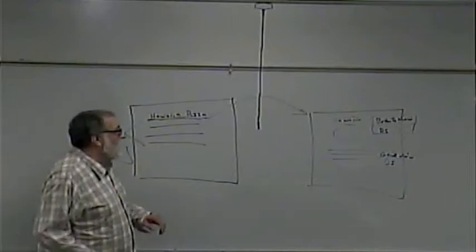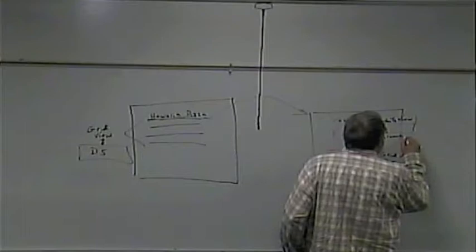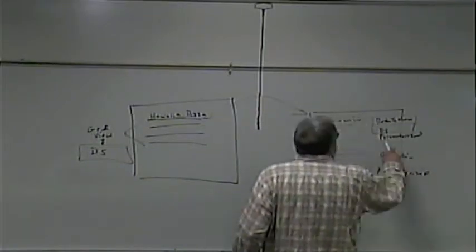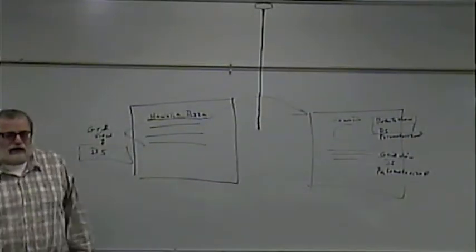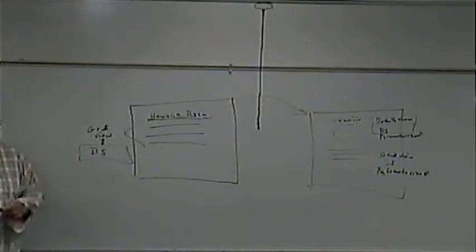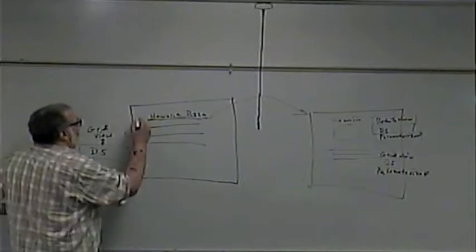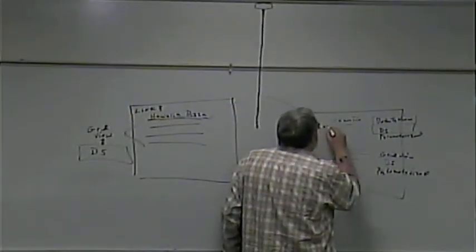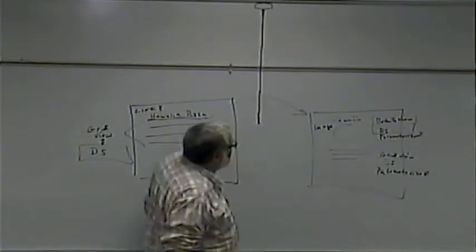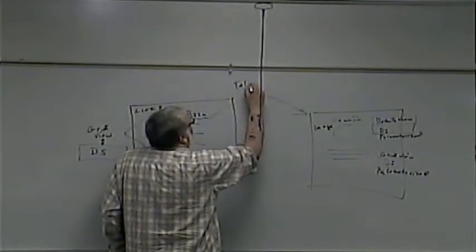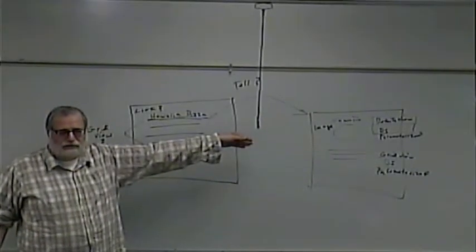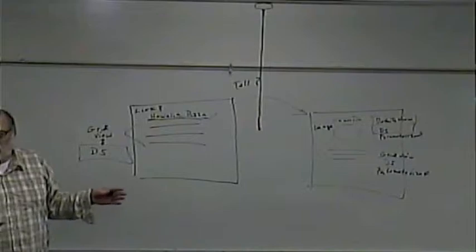These are going to be parameterized data sources, because we don't want everything — we only want data for the selected pizza. We're not going to show every pizza in the details view, and we're not going to show every pizza's toppings in the grid view. We're just going to show the selected pizza.